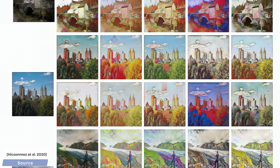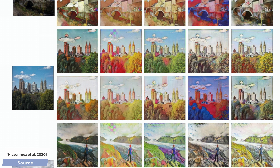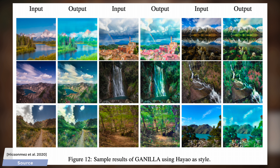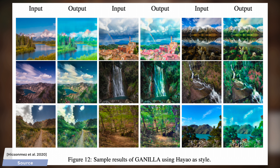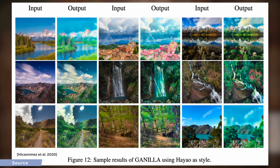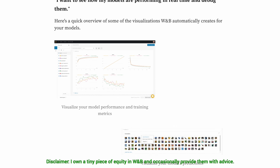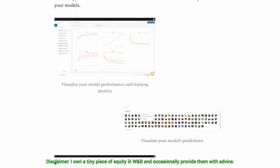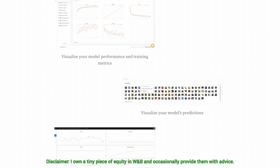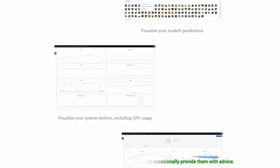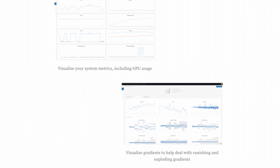Let's put our money where our mouth is: take a bunch of illustrators, marvel at their unique style, and then apply it to photographs to see how the algorithm stacks up against previous works. These comparisons really show how good the new GANILLA technique is at preserving content. Note that these are distinct artistic styles that are really difficult to reproduce, even for humans — it is truly amazing that we can perform such a thing algorithmically.